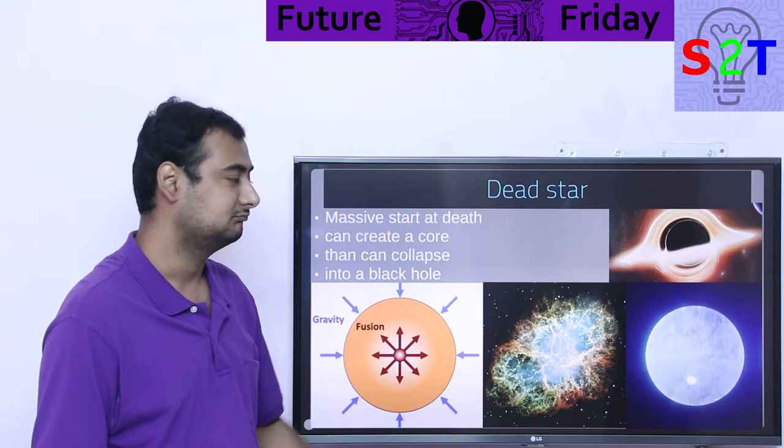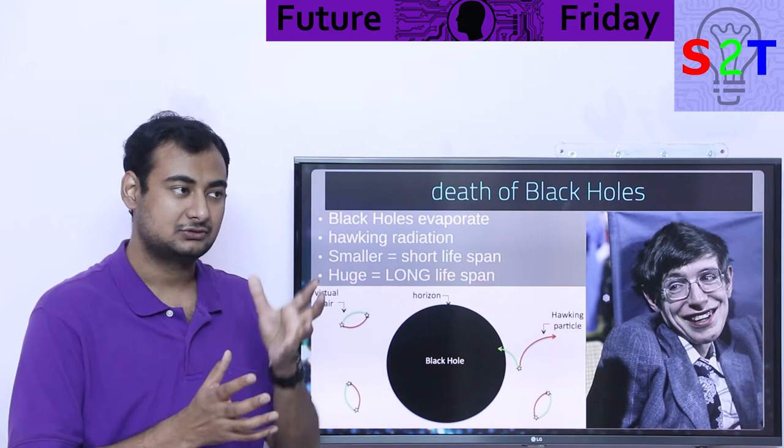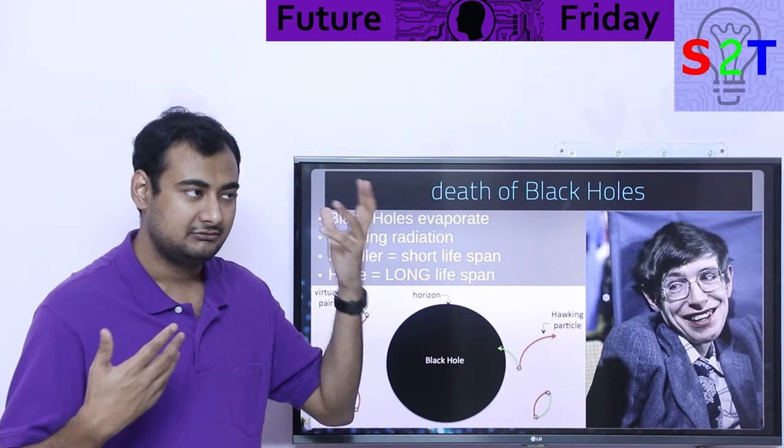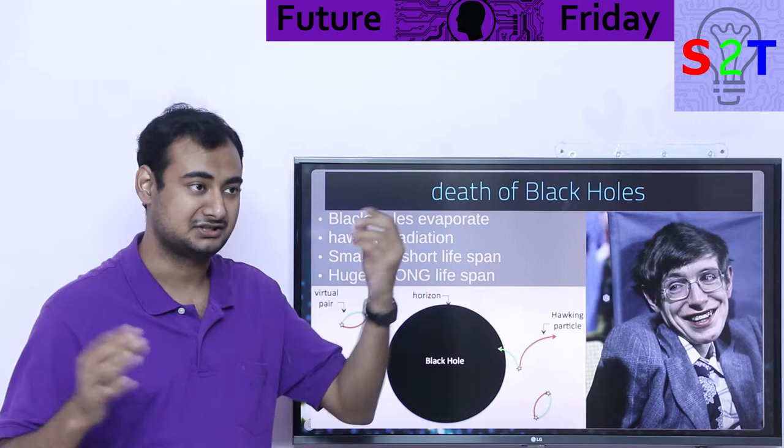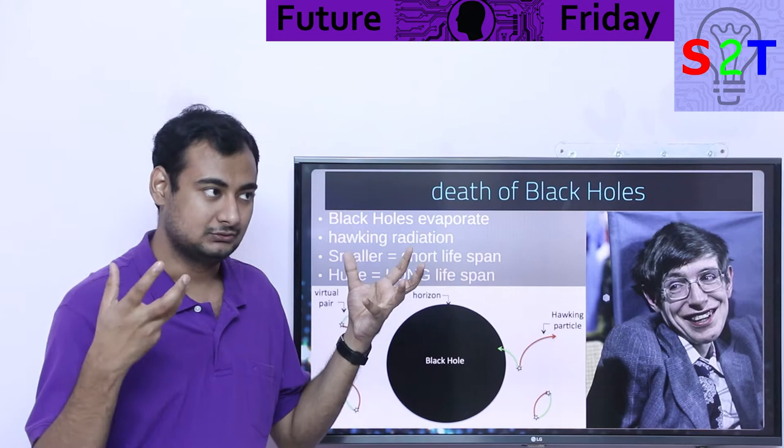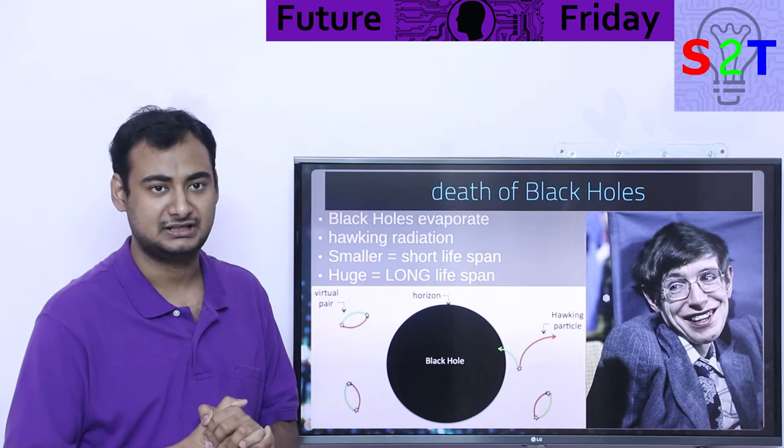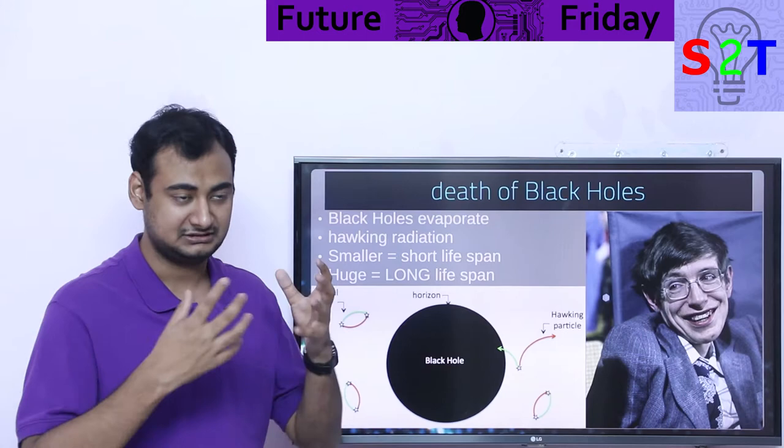A black hole acts like a star gravitationally. If you replaced our sun with a black hole, gravity would be the same and we'd keep orbiting it. It doesn't have movie magic where it sucks everything in. However, it's not radiating energy away. If the sun was replaced, we'd freeze to death. But what happens to a black hole over time?